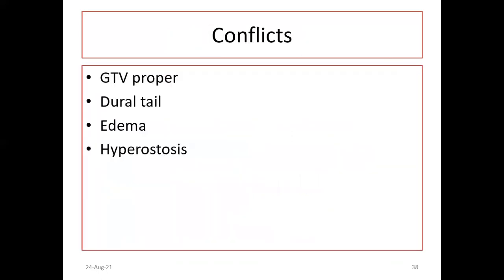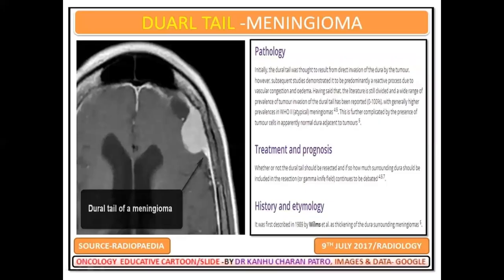So, where are the conflicts? What should the GTV properly include? What part of the dural tail should be included in the CTB? Should edema be included? And what about hyperostasis? These three or four parameters should be discussed for target delineation.